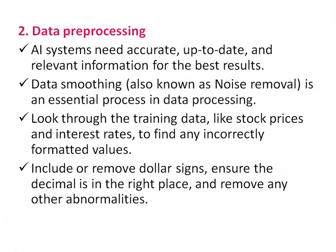Step two is data pre-processing. AI systems need accurate, up-to-date, and relevant information for the best results. Data smoothing, also known as noise removal, is an essential process. For this, look through the training data — like stock prices and interest rates — to find any incorrectly formatted values, then include or remove dollar signs, ensure the decimal is in the right place, and remove any other abnormalities.